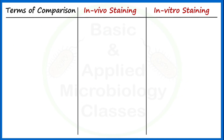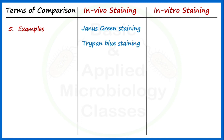The fifth point of difference is examples. For in vivo staining, Janus green staining and Trypan blue staining are very common protocols. Janus green staining is used to stain mitochondria, while Trypan blue staining is used to distinguish between live and dead cells. Both Janus green and Trypan blue are examples of vital stains. For in vitro staining, Gram staining is a very good example.